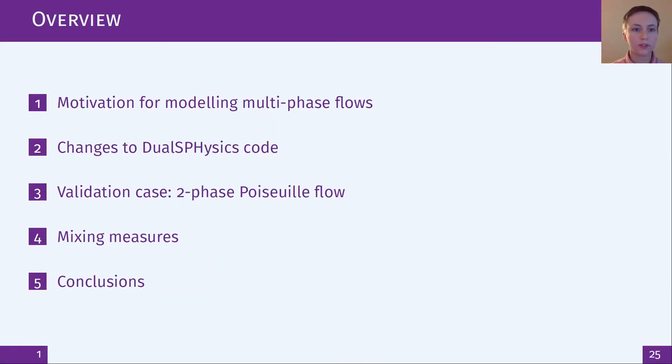Firstly I'll talk about the motivation for modeling these types of flows before giving an overview of the changes I've made to the DualSPHysics code. Then I'll be testing the model against a two-phase Poiseuille flow case before investigating some mixing measures that are useful for these cases and then moving on to some conclusions.